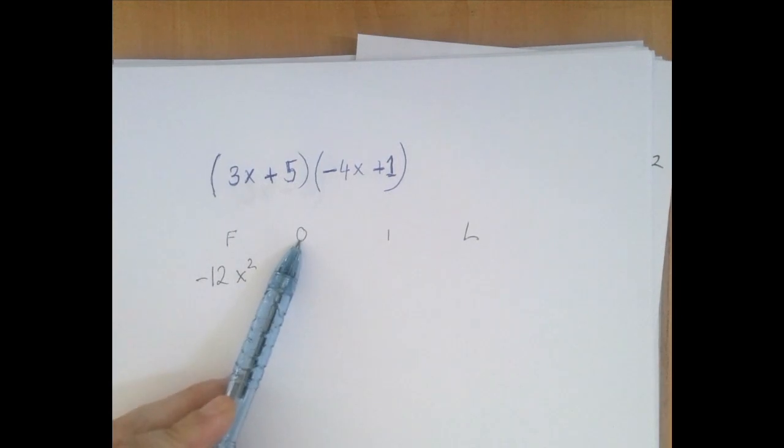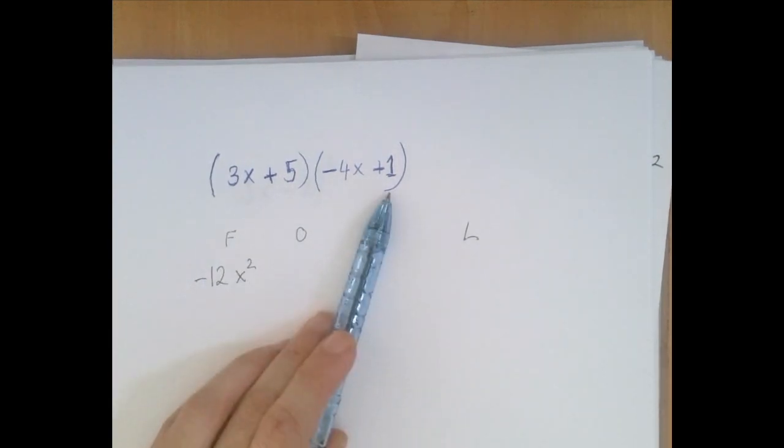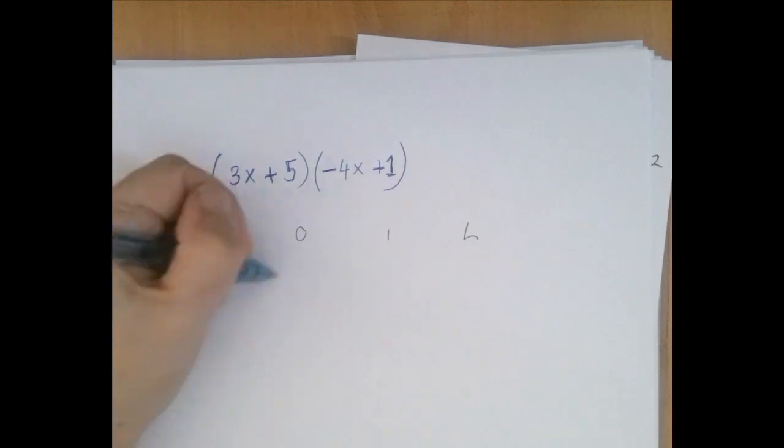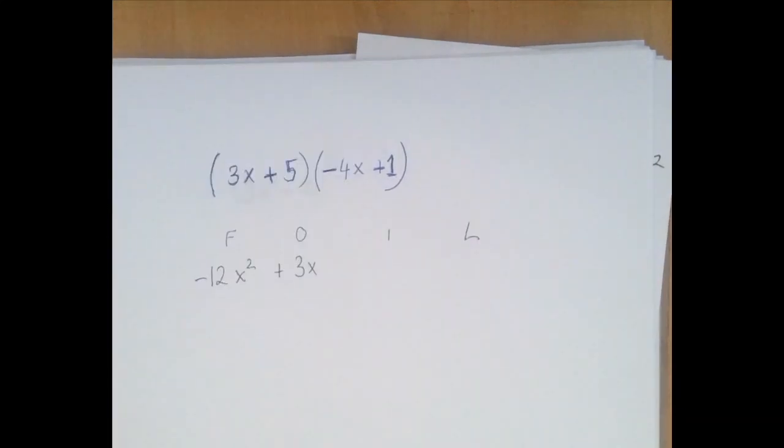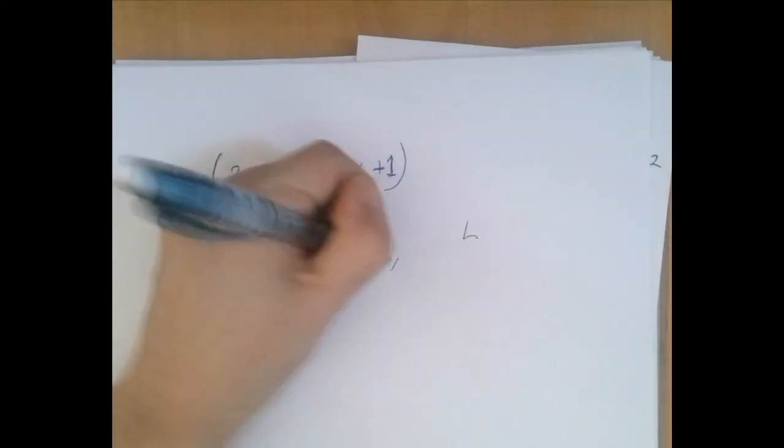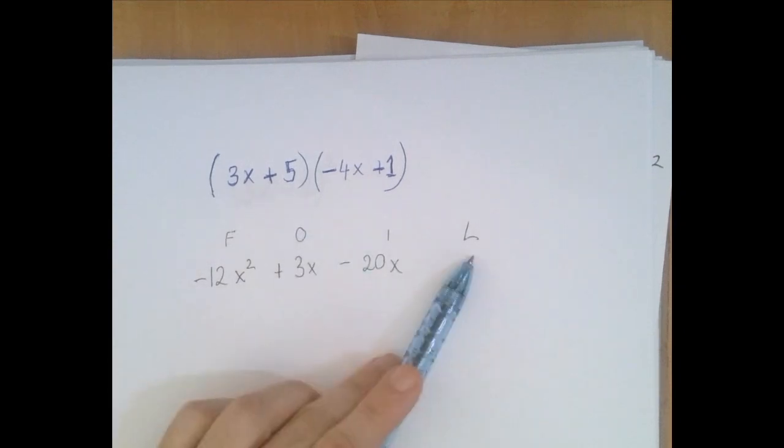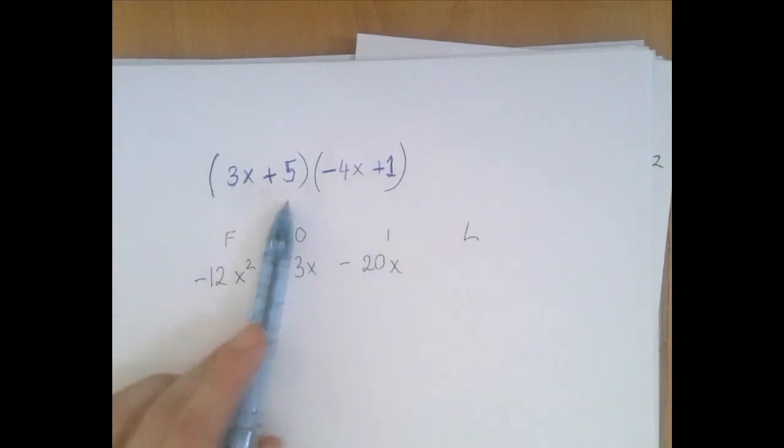Next up, O is for the outer term. So 3x times 1 is 3x or plus 3x. I is for the inner ones. So we're going to multiply plus 5 with negative 4x, that's negative 20x. And finally, L is the last with the last one, plus 5 times plus 1, that is just plus 5.